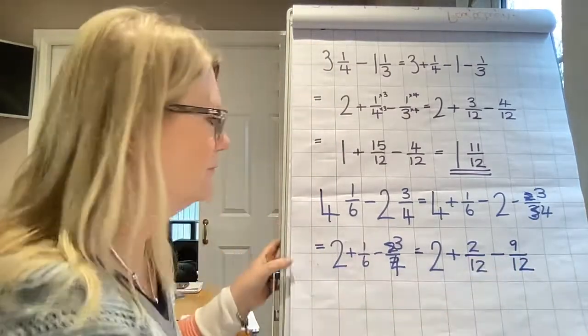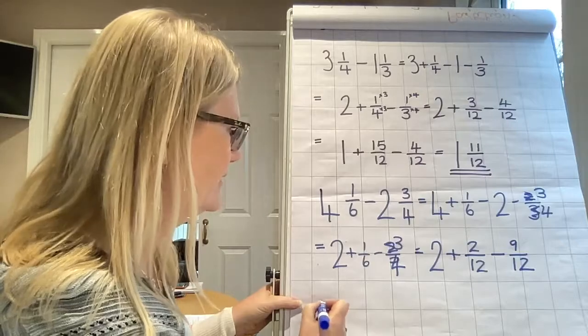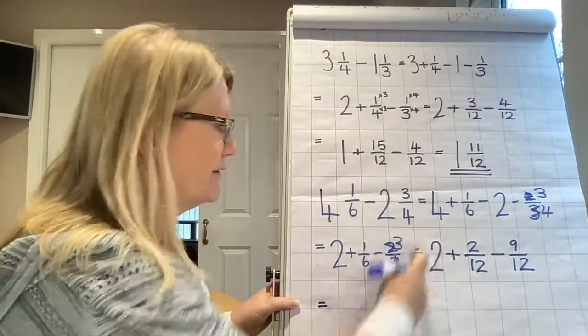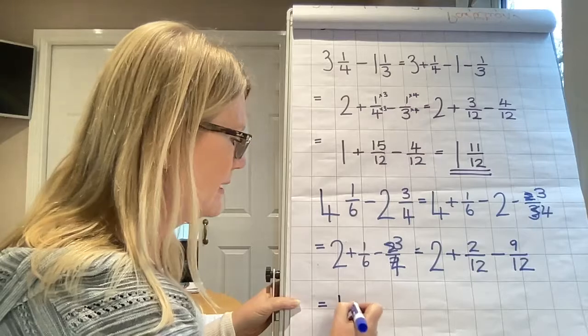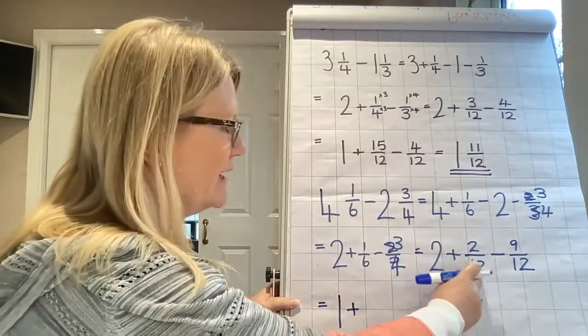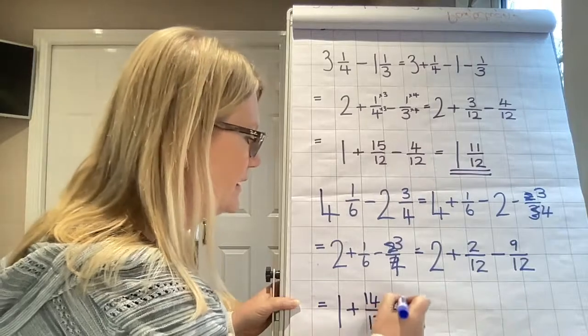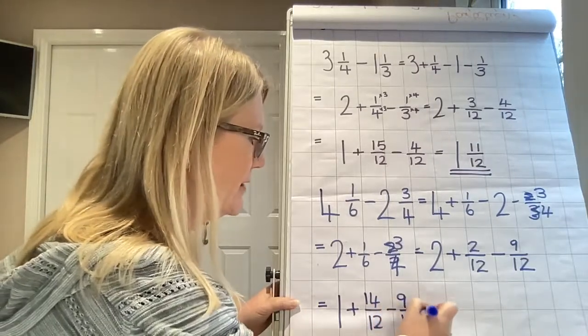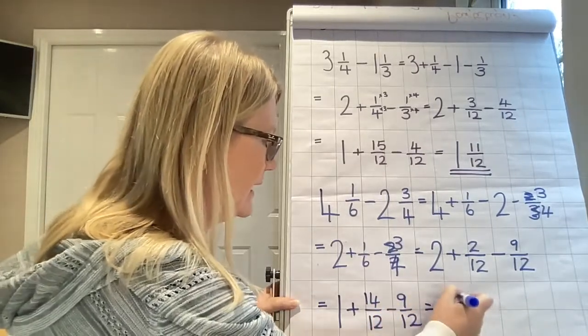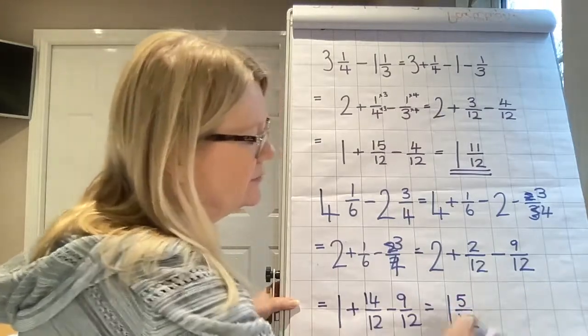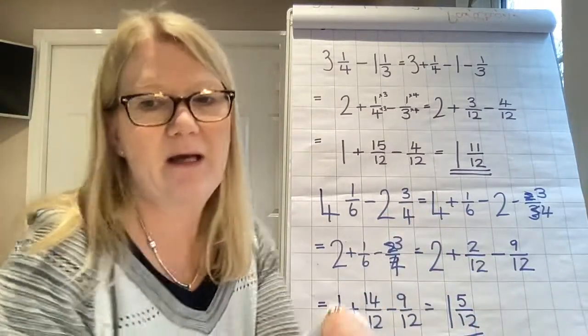Two minus nine. We know we can't do that. So, I'm going to exchange one of those. So, I'm going to have one integer left. Plus, twelve, thirteen, fourteen twelfths. Minus nine twelfths. My answer will be one and five twelfths. There we go.